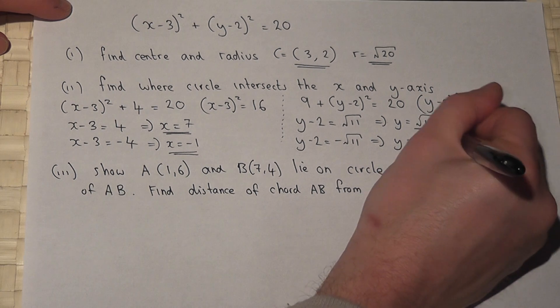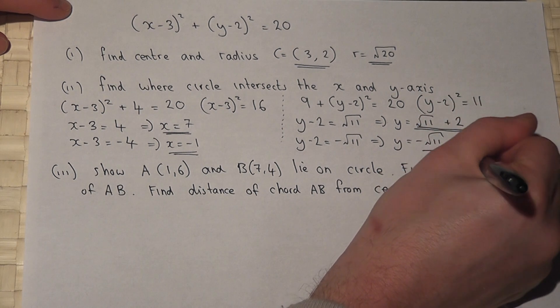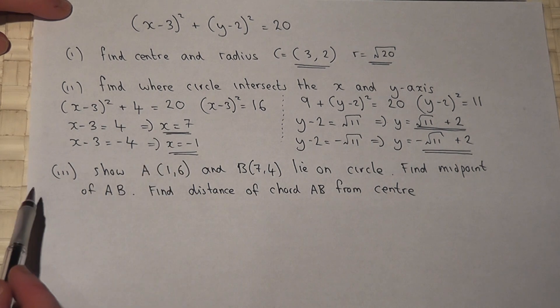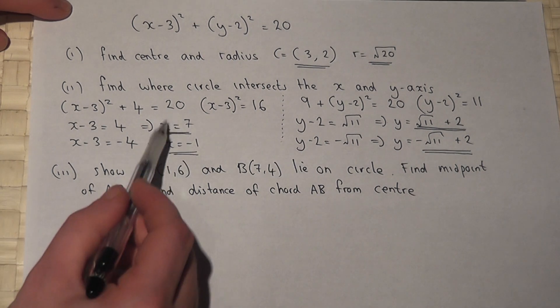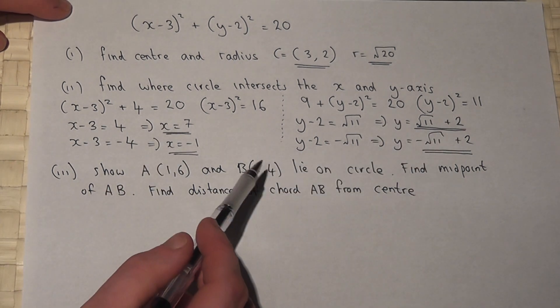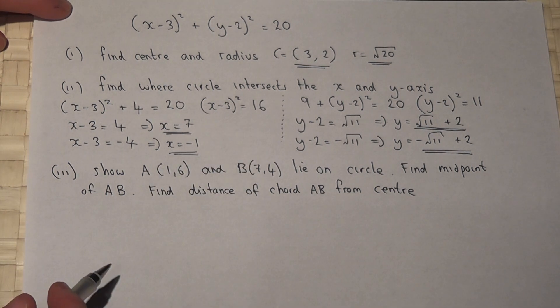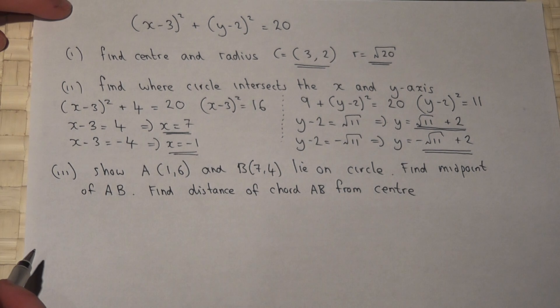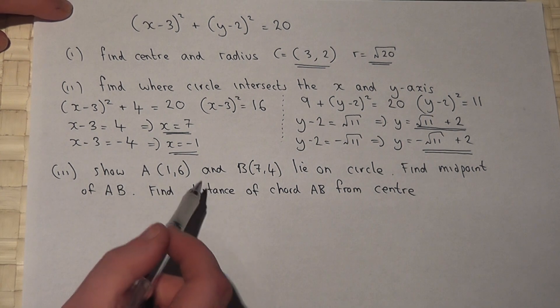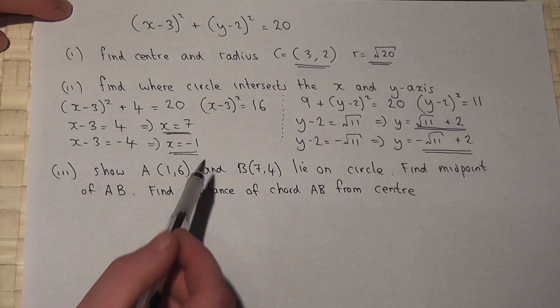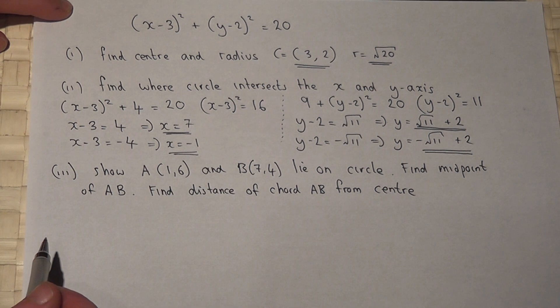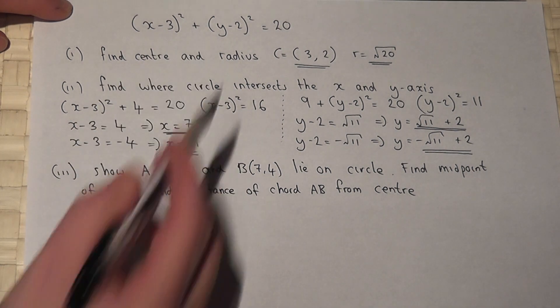These happen to be surds rather than integers. However, we've found the x-coordinates and the y-coordinates where the circle intersects the x and y axis. In part 3, we're asked to show that two points actually lie on a circle. These points lie on a circle if they satisfy the equation, so let's check this.